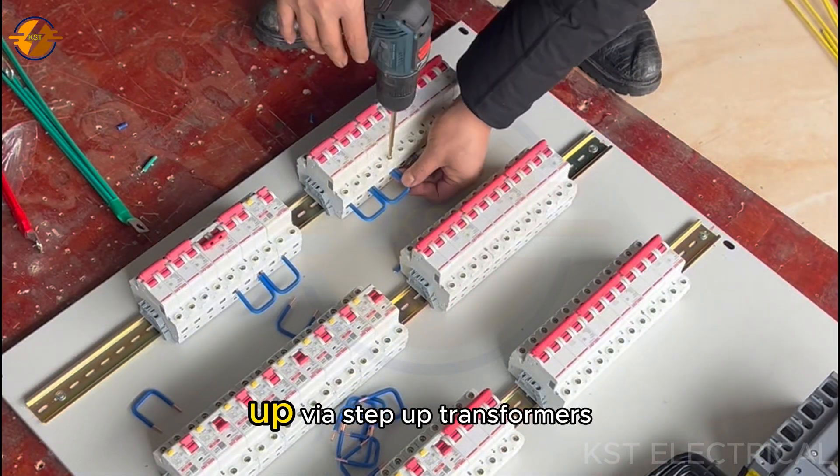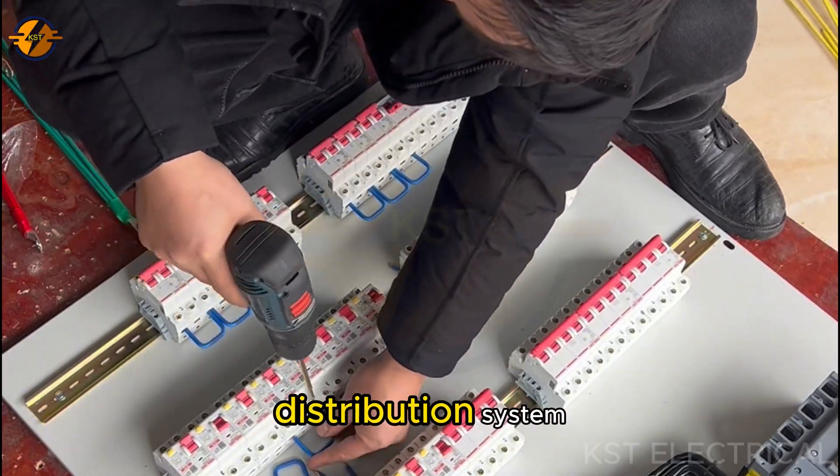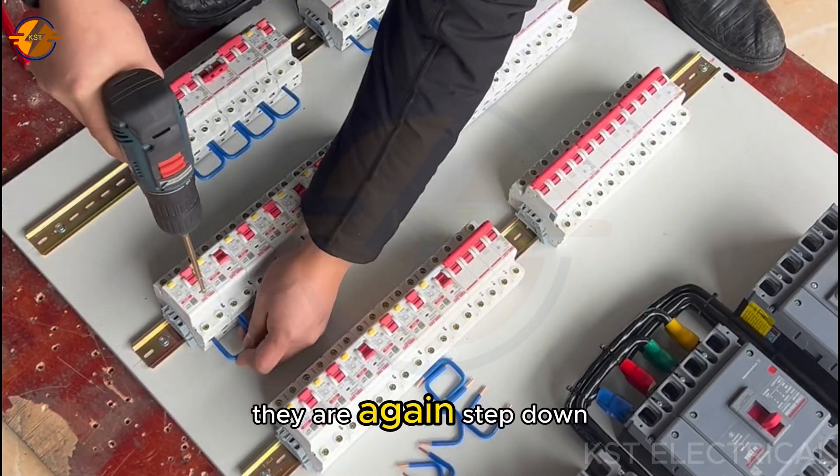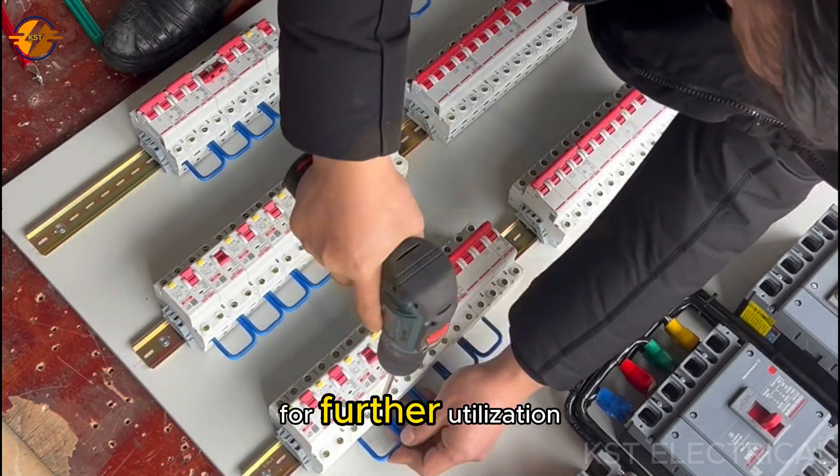The voltage levels are stepped up via step-up transformers for power transmission. In the distribution system, they are stepped down by a step-down transformer for further utilization.